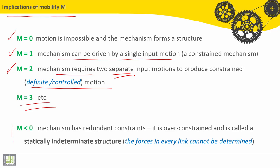If the mobility M is negative, the mechanism has redundant constraints. It is over-constrained and it is called a statically indeterminate structure. The forces in every link cannot be determined.